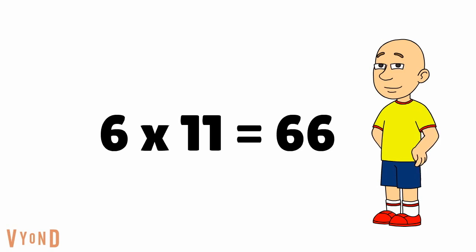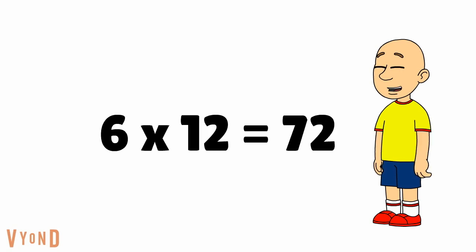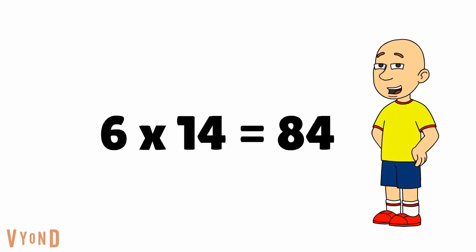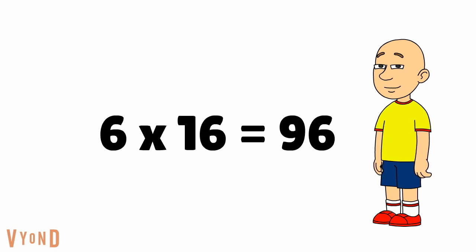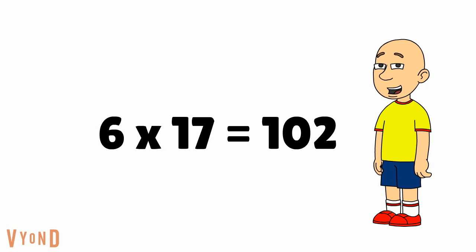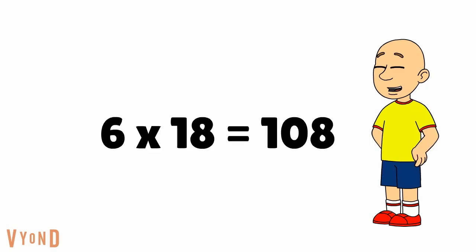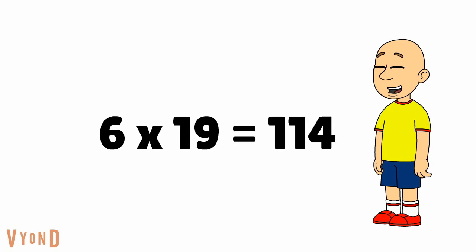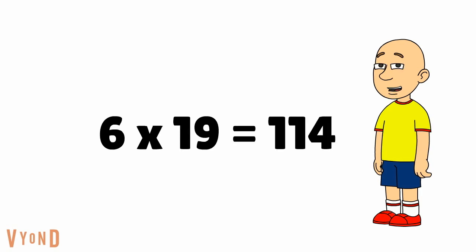6 times 11 equals 66. 6 times 12 equals 72. 6 times 13 equals 78. 6 times 14 equals 84. 6 times 15 equals 90. 6 times 16 equals 96. 6 times 17 equals 102. 6 times 18 equals 108. 6 times 19 equals 114. 6 times 20 equals 120.